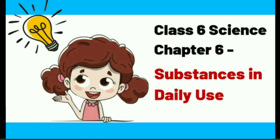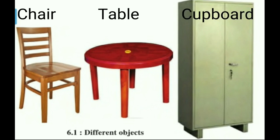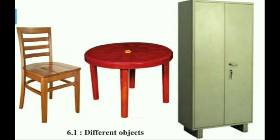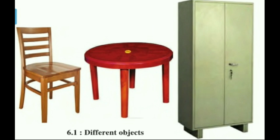General Science Standard 6, Chapter 6: Substances in Daily Use. Can you recall? Which three objects do you see in the picture? How did you identify them? What material are they made of? Can any one of these materials be used to make all the three objects?